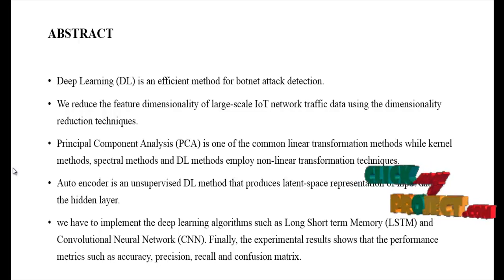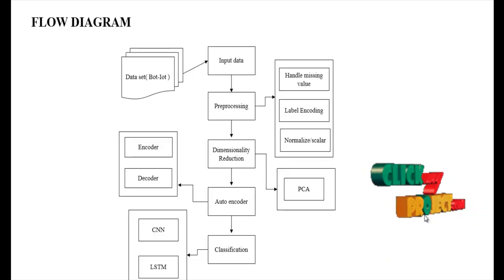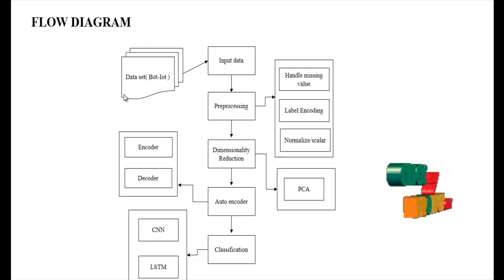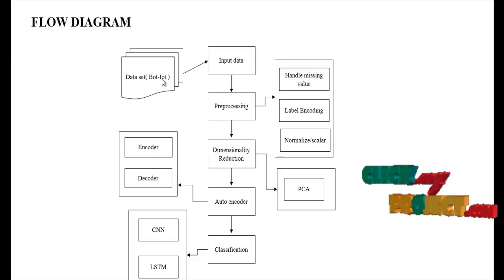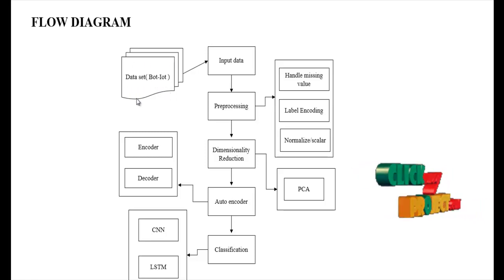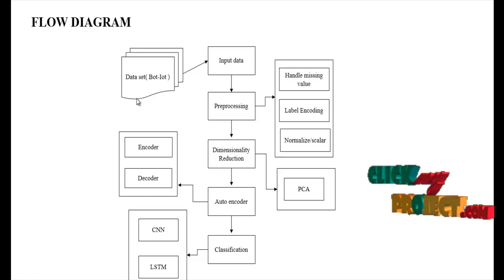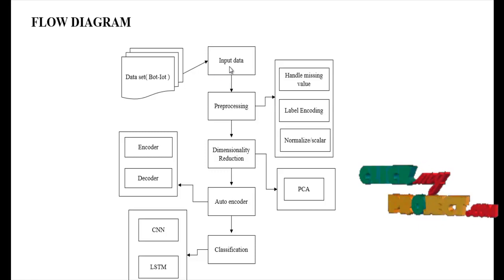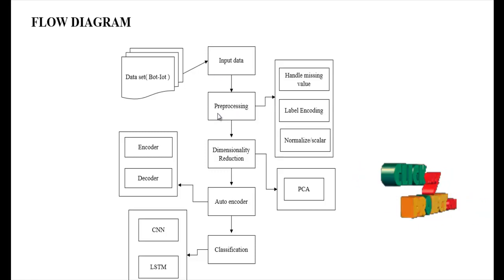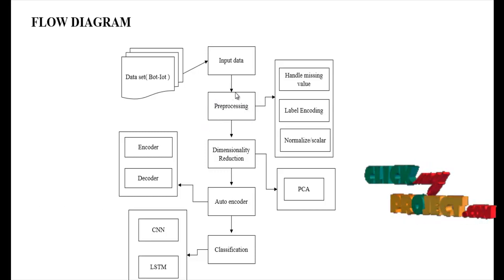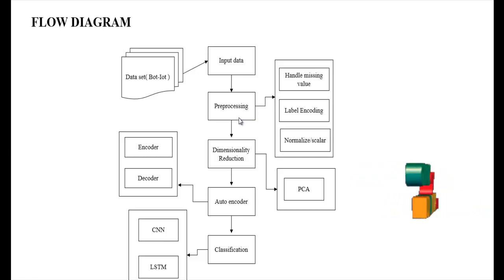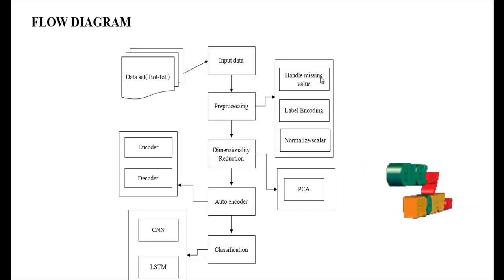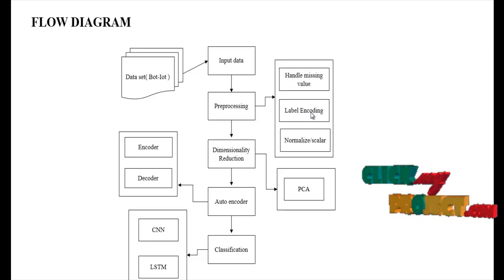The experimental results show performance metrics such as accuracy, precision, recall, and confusion matrix. Now regarding the flow of our process: first we take the Bot-IoT dataset, collected from repositories like UCI, GitHub, and so on. From the dataset we take the input data, then implement the preprocessing technique, which means removing unwanted data or unnecessary noise.